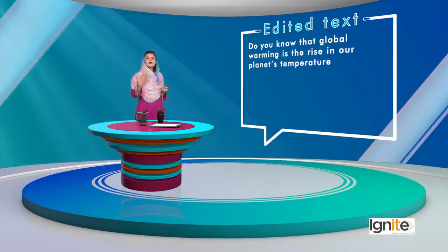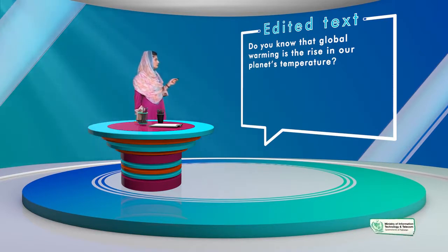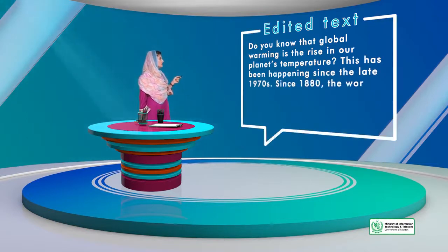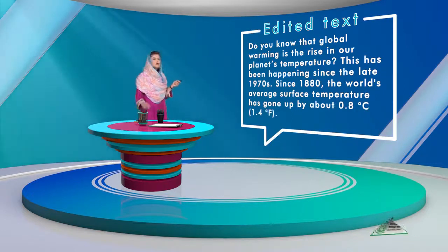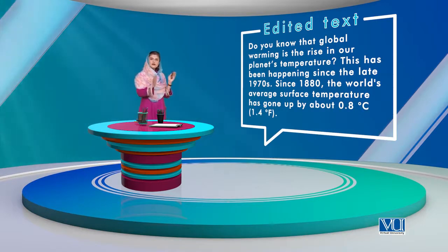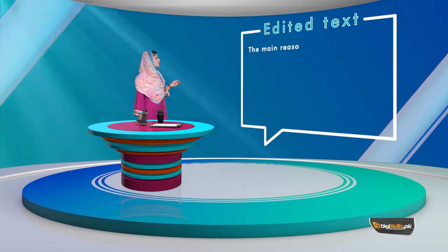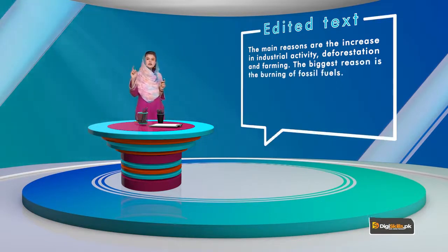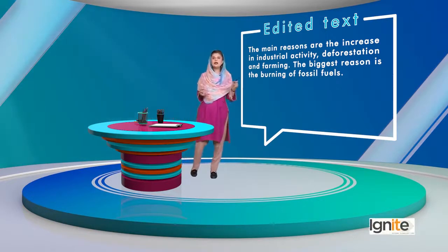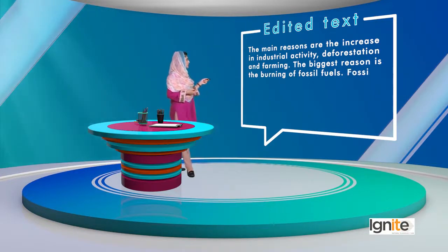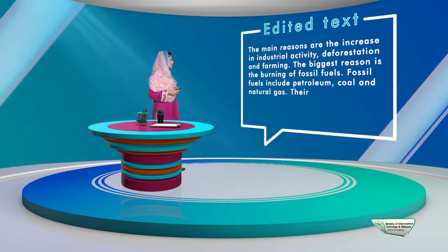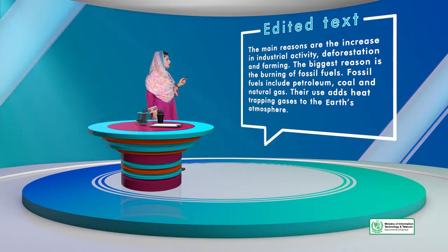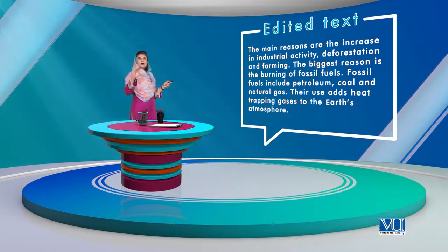We have started the modified version with a question — directly addressing the audience. 'Do you know that global warming is the rise in our planet's temperature? This has been happening since the late 1970s. Since 1880, the world's average surface temperature has gone up by about 0.8 degrees.' The baseline reference has been removed completely to simplify it — so that any layman or child can easily understand it. 'The main reasons are the increase in industrial activity, deforestation and farming. The biggest reason is the burning of fossil fuels.' Fossil fuels were mentioned before but not explained. Here we have explained what fossil fuels include — fossil fuels include petroleum, coal and natural gas. Their use adds heat-trapping gases to the earth's atmosphere. So this is now easier and not as dense.